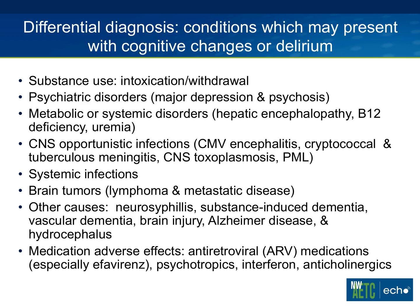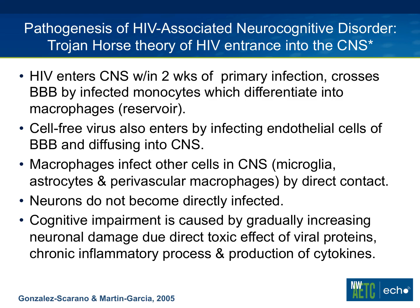We also have to think about medication adverse effects that could cause cognitive changes. The pathogenesis of HIV-associated neurocognitive disorder has to do with the Trojan horse theory of HIV entrance into the CNS. HIV enters the CNS within two weeks of primary infection. It crosses the blood-brain barrier by infecting monocytes, which differentiate into macrophages that remain for a long period of time. Cell-free virus can also enter by infecting endothelial cells and diffusing into the CNS, and macrophages can also infect other cells in the CNS.